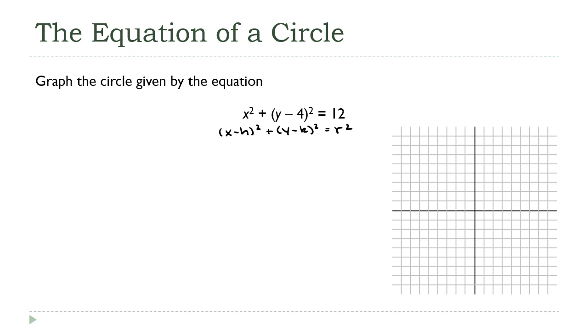So you can see pretty quickly here that k is going to be 4. What about x? Because there is no number being subtracted here. Well, you can always think of this as x minus 0 squared. And so the coordinates of my center are going to be 0, 4. And my radius...